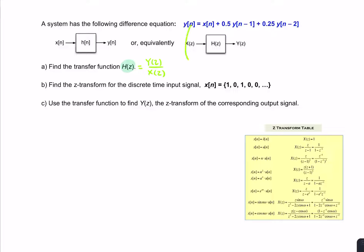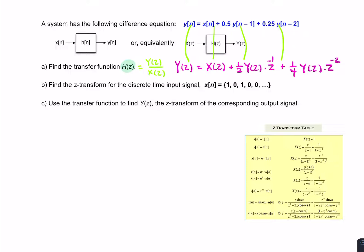We take each of the terms and find the Z-transform of each. The Z-transform of y(n) is simply Y(z); x(n) becomes X(z); y(n−1) is Y(z) times the delay factor z to the power minus 1; and y(n−2), delayed by two samples, is Y(z) times z to the minus 2. Delays of one sample and two samples correspond to z⁻¹ and z⁻².